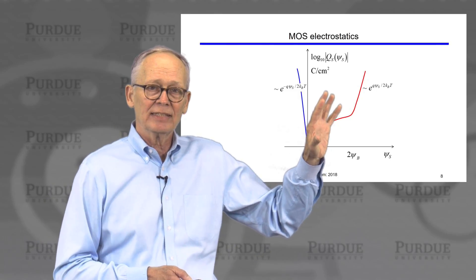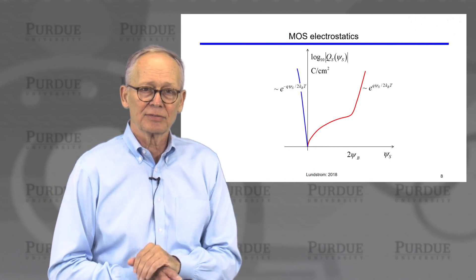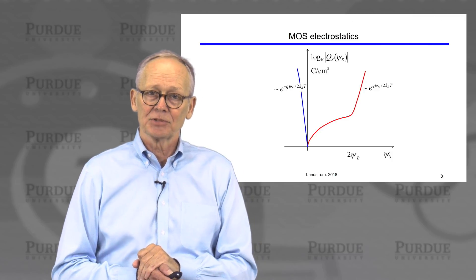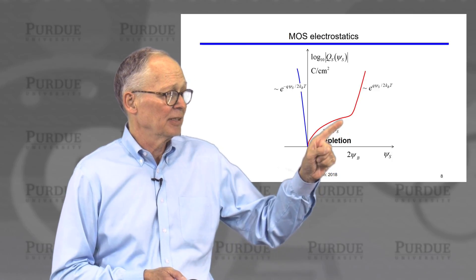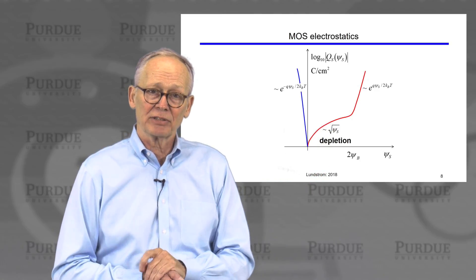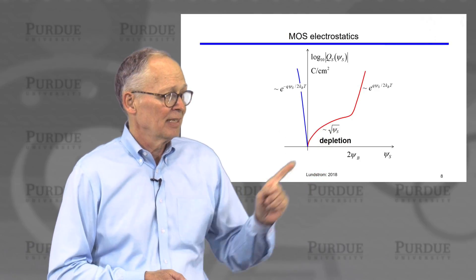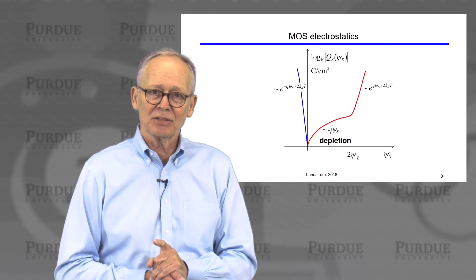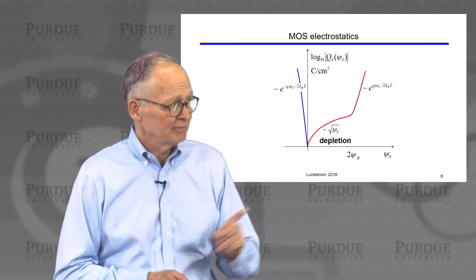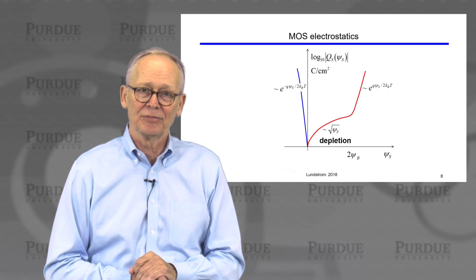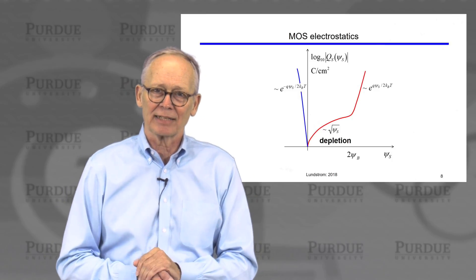When we qualitatively sketched the charge in the semiconductor versus surface potential, I argued that in the depletion region — where the surface potential is positive but not too positive — the depletion charge magnitude grows as the square root of the surface potential. That's exactly what we've derived from the depletion approximation, and now we see where that comes from.